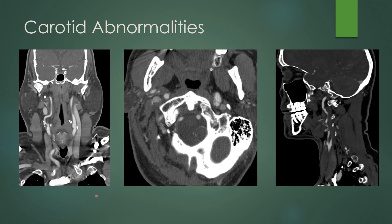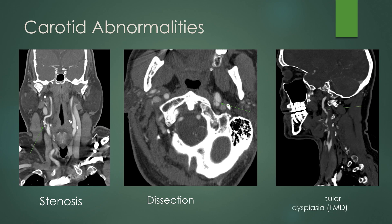Carotid abnormalities have been associated with pulsatile tinnitus, ranging from carotid stenosis — here you can see significant carotid stenosis caused by complex plaquing, as opposed to the left where there has been a carotid endarterectomy — to a dissection, where you see the intimal flap with dilation of the vessel, or fibromuscular dysplasia. Here's the beaded appearance of that mid to distal cervical ICA, the classic appearance of fibromuscular dysplasia (FMD).